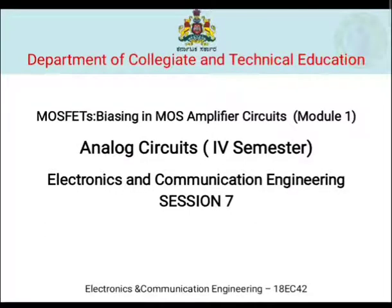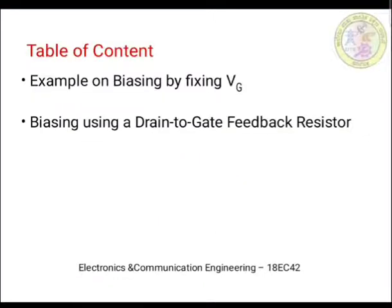Welcome to session 7 of biasing in MOS amplifier circuits. In the previous session we saw a biasing method by fixing gate voltage, using a voltage divider bias formed by RG1 and RG2, as well as RD and RS resistors. In this session we will take one example to understand how designing of such a biasing circuit can be done, and also cover biasing using a drain-to-gate feedback resistor.